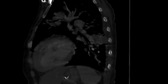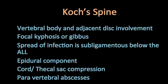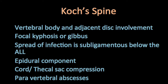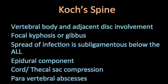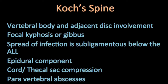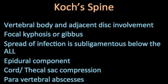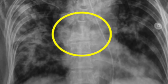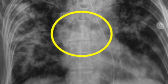A couple of key points regarding tuberculosis of the spine: it usually involves two adjacent vertebral bodies and the disc in between. It can cause a focal kyphosis or gibbus, most commonly in the dorsal or upper lumbar spine. The spread of infection is subligamentous, below the anterior longitudinal ligament. Very often we see an epidural component, which can cause thecal sac compression or even cord compression, and not infrequently we see paravertebral abscesses.